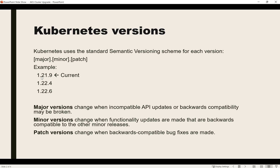1 is the major version, 21 is the minor, and 9 is the patch version. Major versions are usually released every two or three years where there is a major change and sometimes no backward compatibility. Minor versions are updated frequently, like every three months for Kubernetes, where security updates, patches, and small features are provided with backward compatibility.